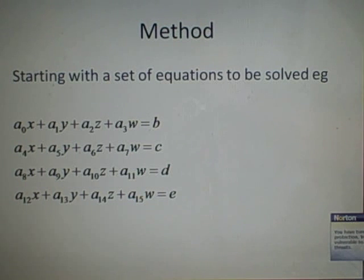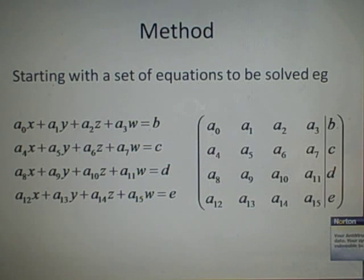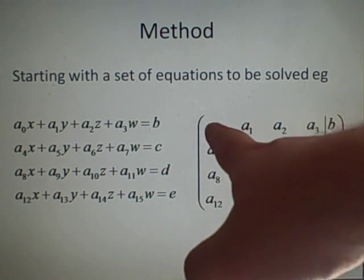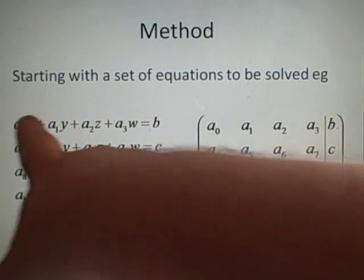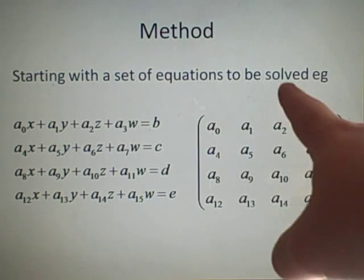To solve these and get different values for x, y, z, and w, we're going to put them in this form here. We have a0, a1, a2, a3, so all the constants in the order of x, y, z, w.